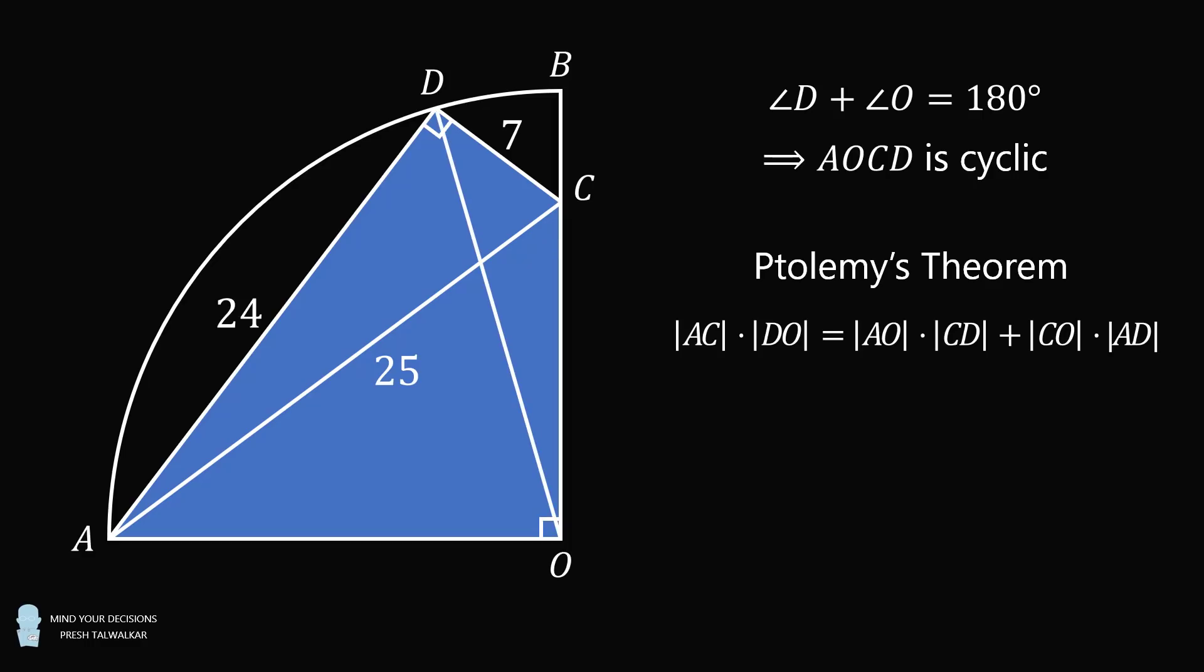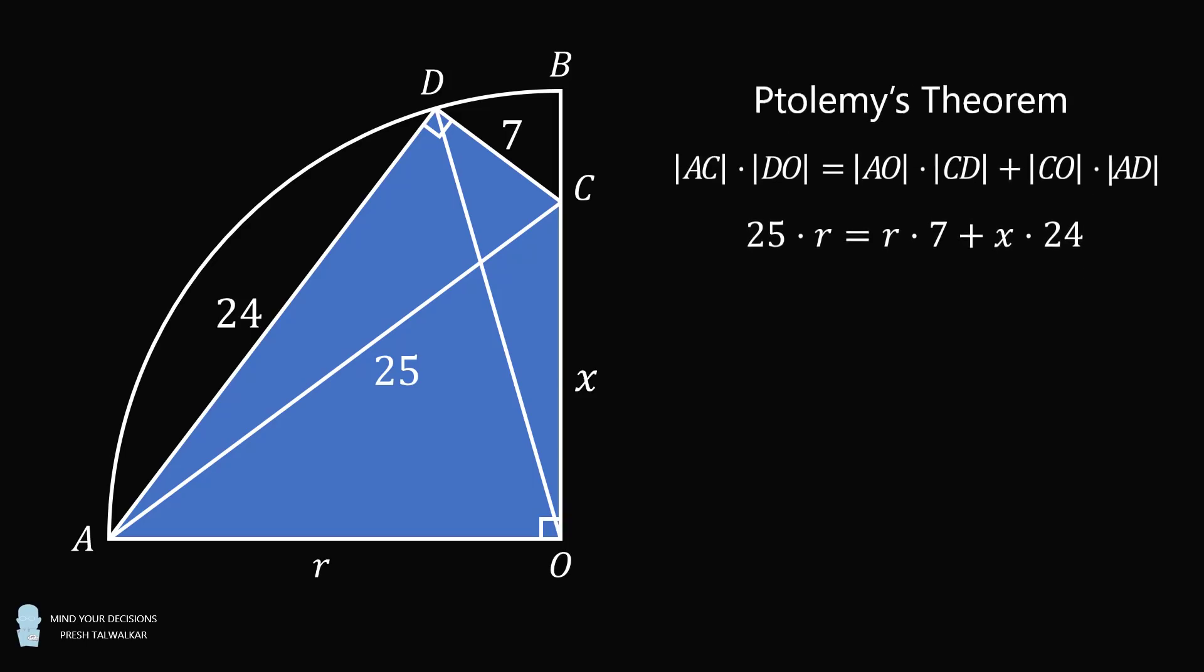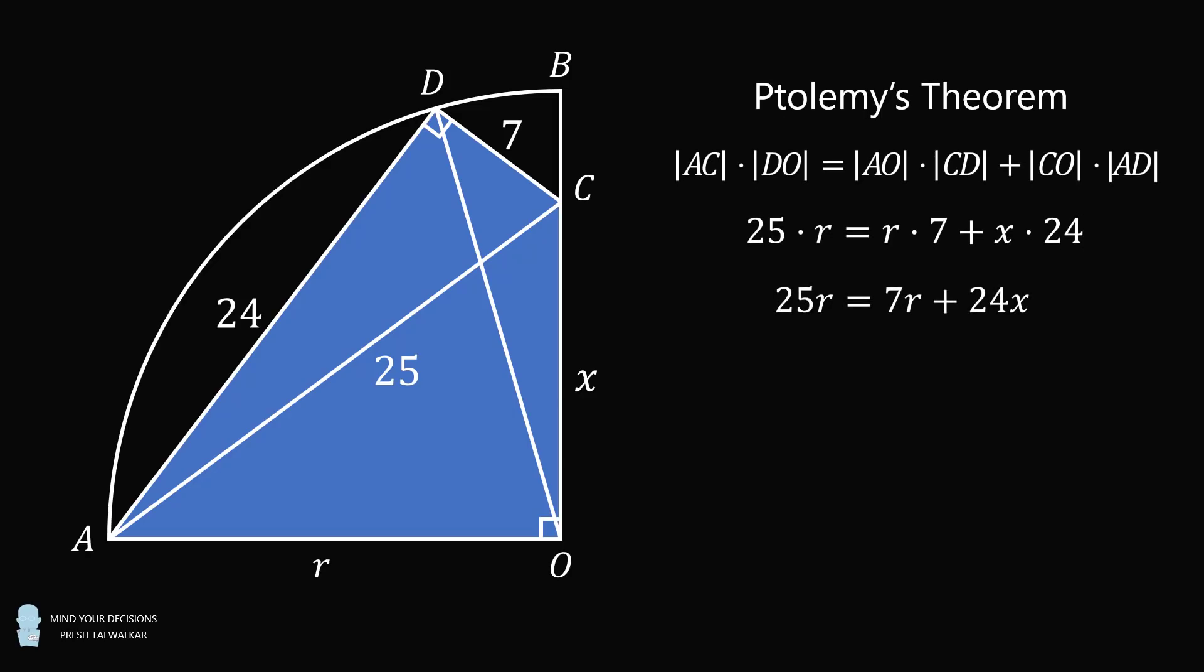Let's construct OD, which is a radius of circle O. It will also have a length equal to R. Now let OC be equal to X, and let's substitute it into Ptolemy's theorem. We have 25 multiplied by R is equal to R multiplied by 7 plus X multiplied by 24. This simplifies to be the following equation. 25R is equal to 7R plus 24X.